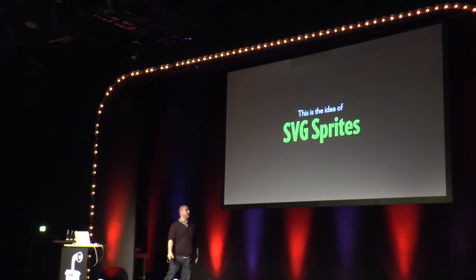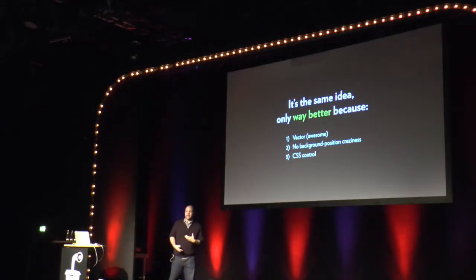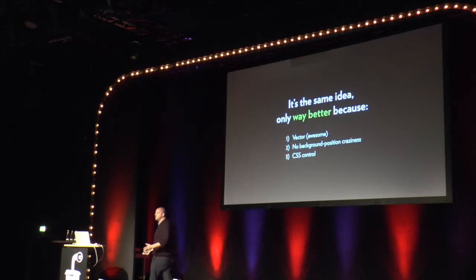This whole thing is the idea of SVG sprites. Remember those raster sprites? That was a cool, clever, efficient idea — the idea being it's really slow for a website to go get a file, so let's just get them all at once. But you had all this dumb CSS math: background-position negative 722 pixels, negative 32 pixels, to move the thing into place. SVG spriting is cool because it's vector so you can scale it to any size. There's none of that background-position math craziness, and you get CSS control over each part of the icon. Loads of advantages, and it's not even that hard.